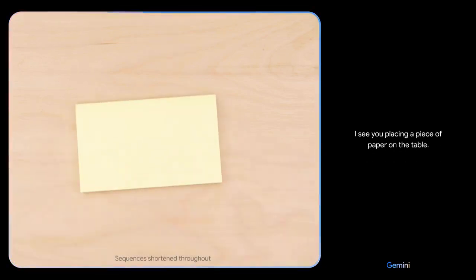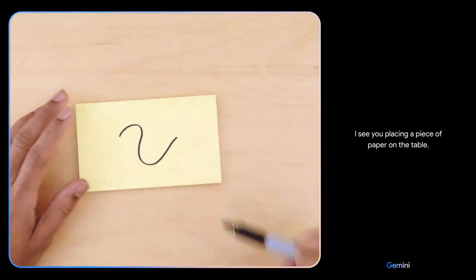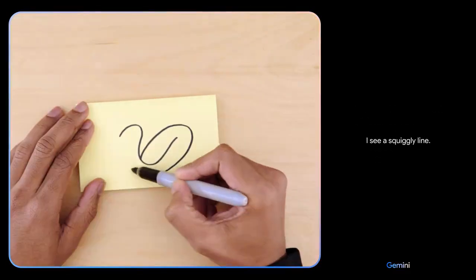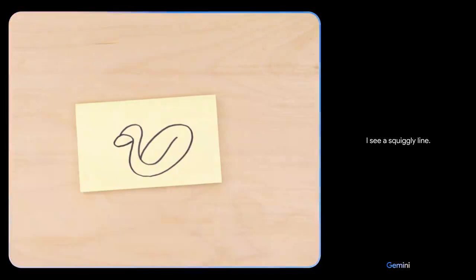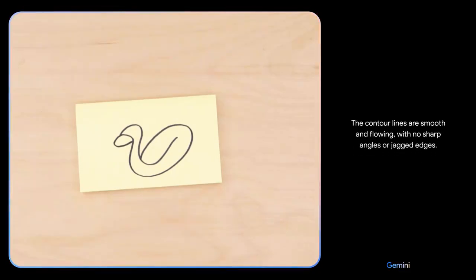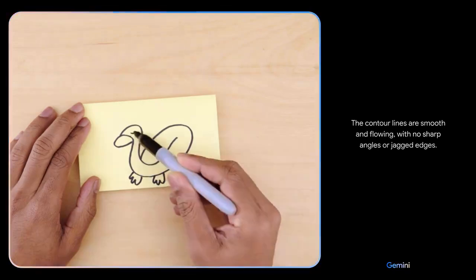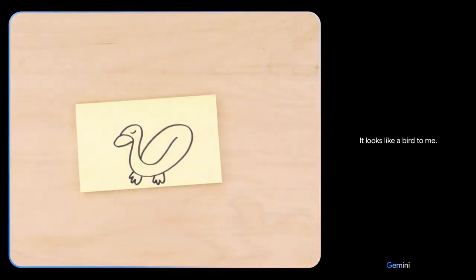I see you placing a piece of paper on the table. I see a squiggly line. What about now? The contour lines are smooth and flowing, with no sharp angles or jagged edges. It looks like a bird to me.